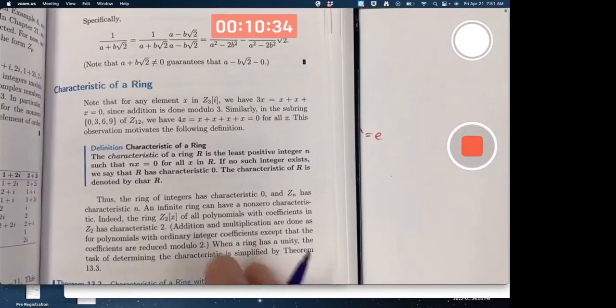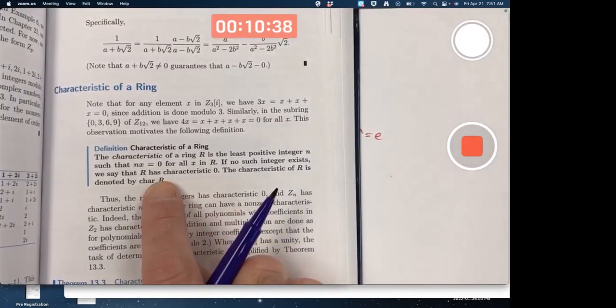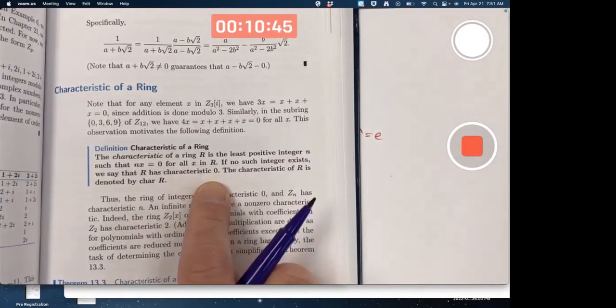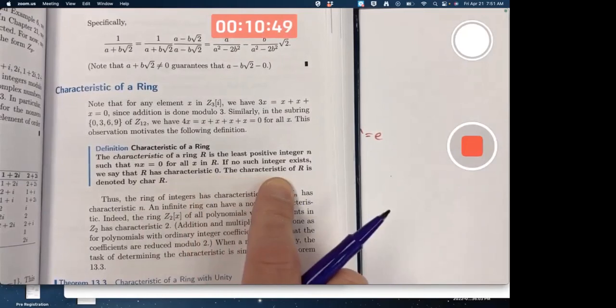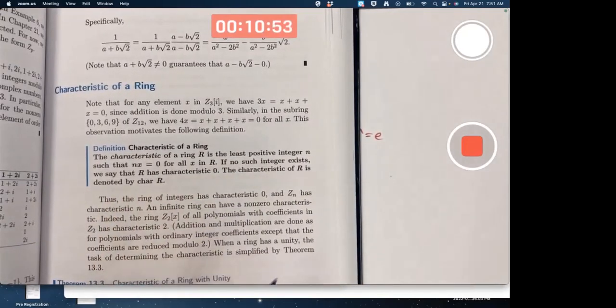Coming back to this definition, if no such integer exists, we say r has characteristic 0, which is kind of weird. Maybe you would think the characteristic should be infinity or something. But no, we say the characteristic is 0, and the characteristic of r is denoted by char r or car r.